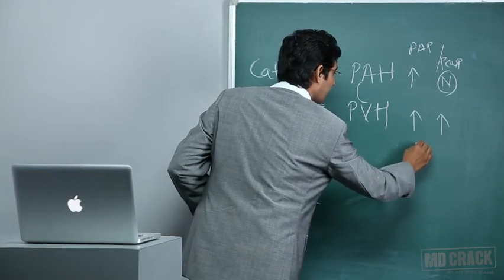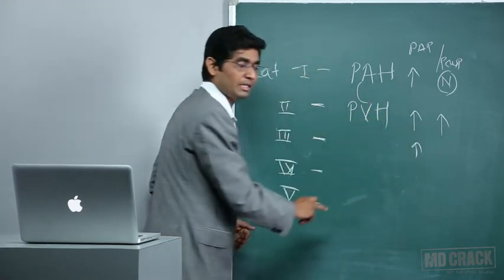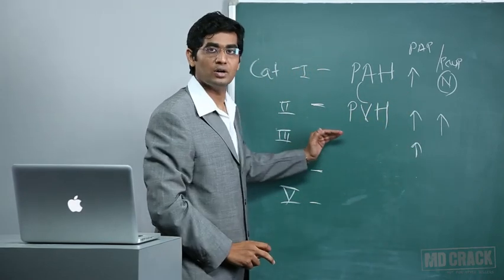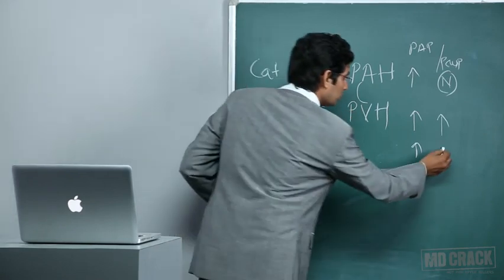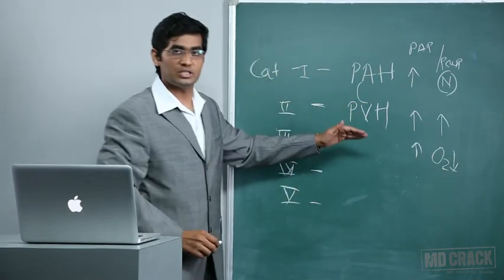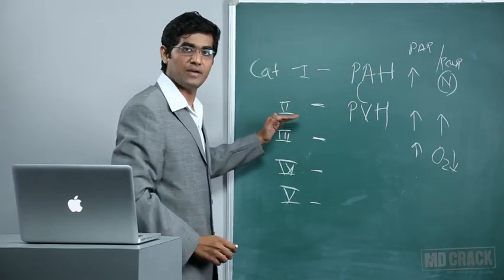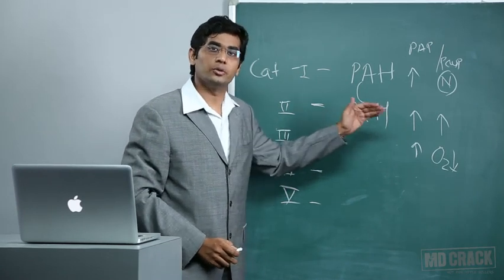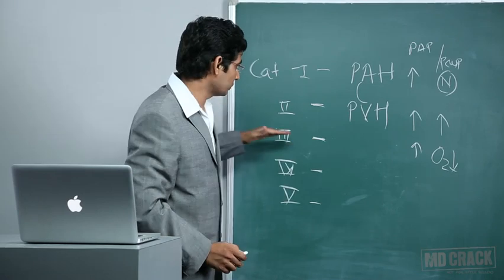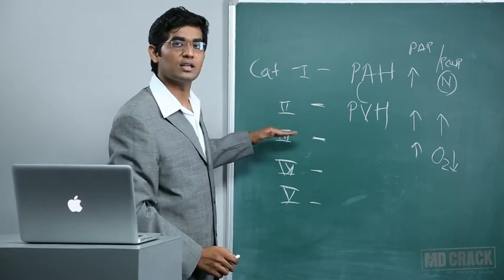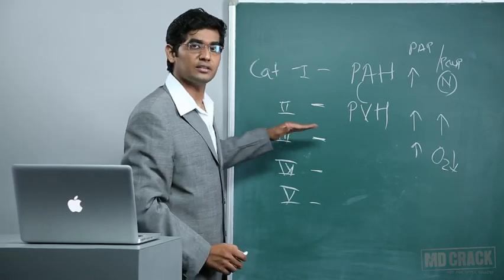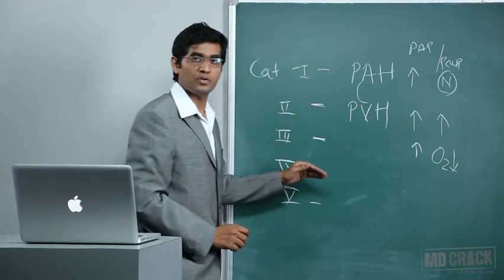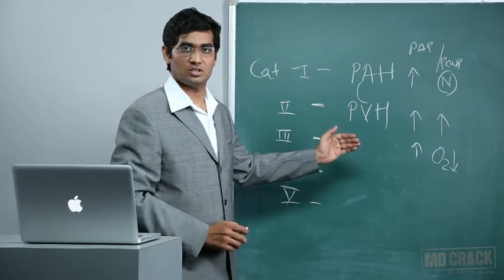Category 3 patients will also have high PAP along with hypoxia, meaning the patient has underlying lung diseases like ILD, COPD, or chronic asthma. These patients are classified under Category 3. Category 4 includes patients with chronic thromboembolic pulmonary hypertension.